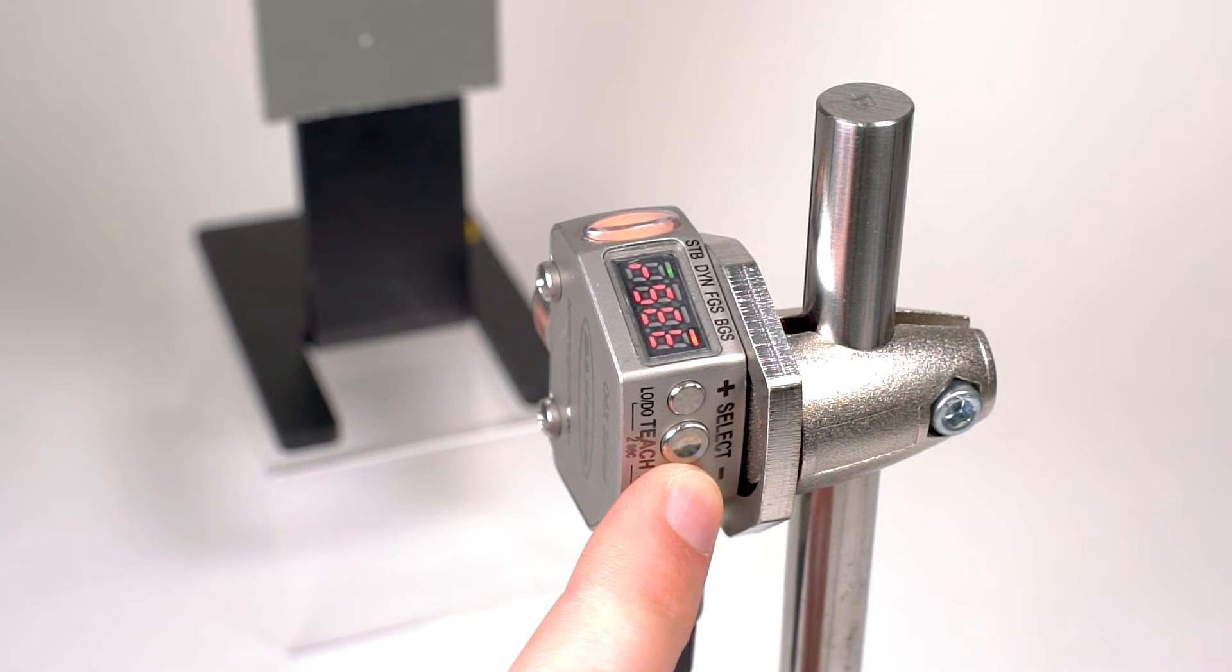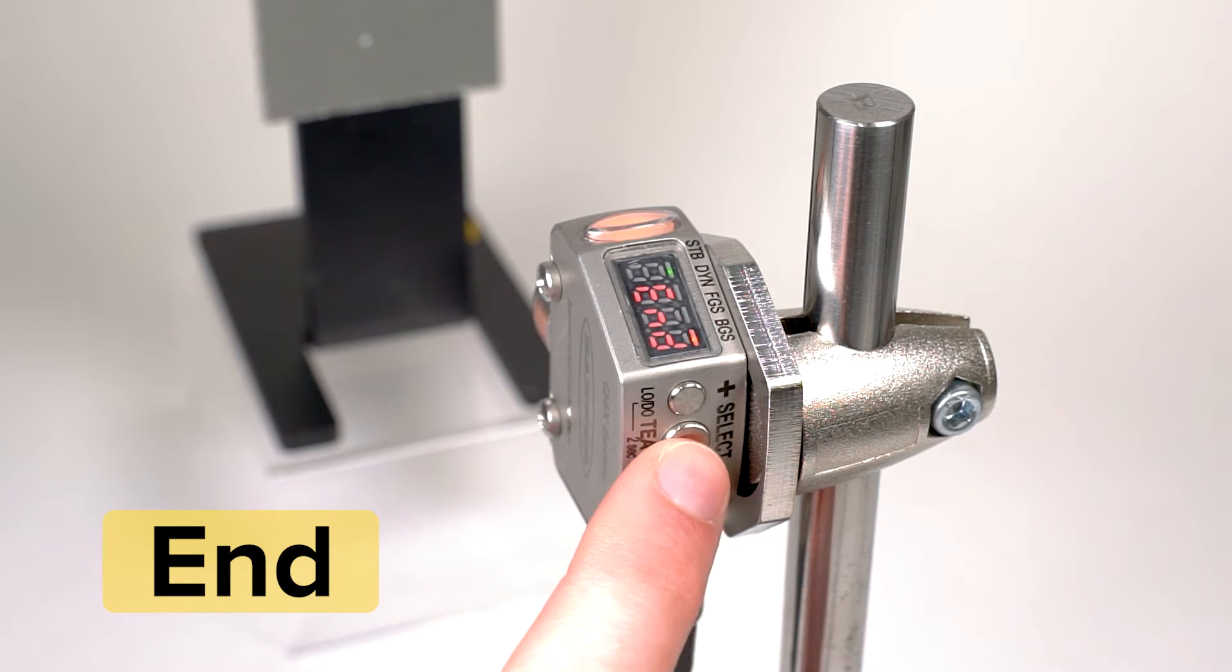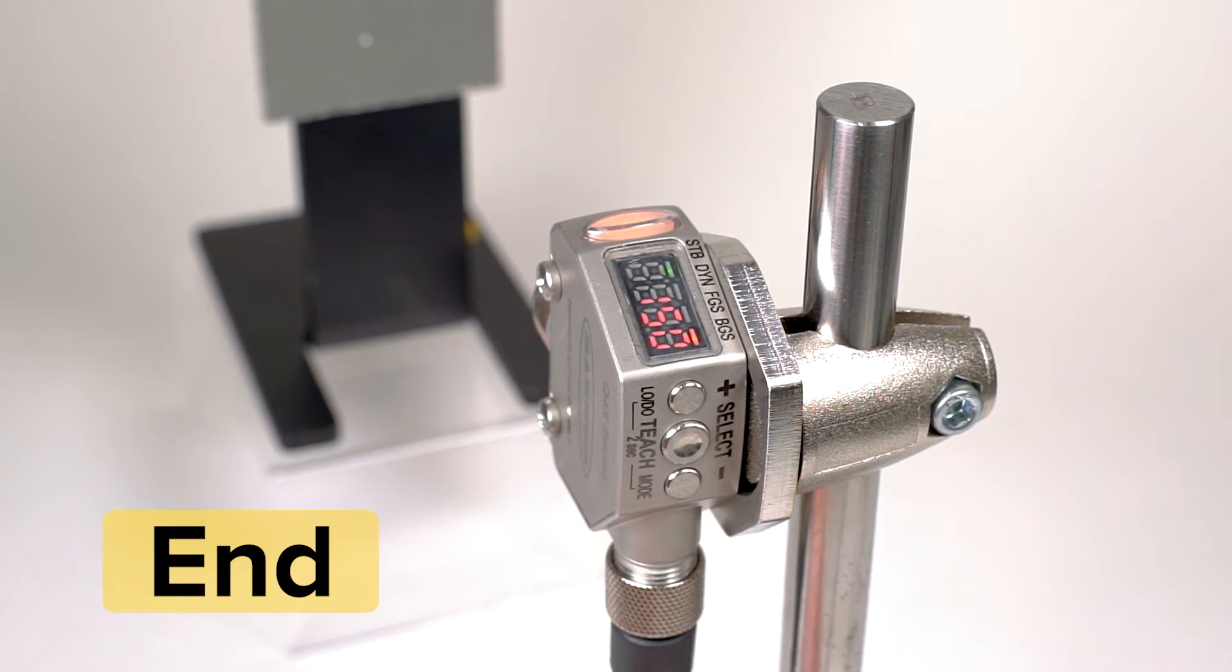Use the plus and minus buttons again to navigate through the menu until you see END and press the select button one more time, which will return you to the sensor run mode.